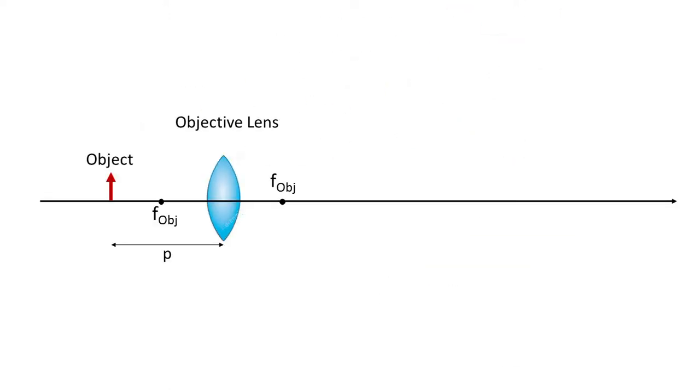The small object under scrutiny is placed just beyond the focal point of the objective lens. We label the object distance P and the focal length F. The focal length of the objective in a microscope is normally quite short, less than one centimeter.